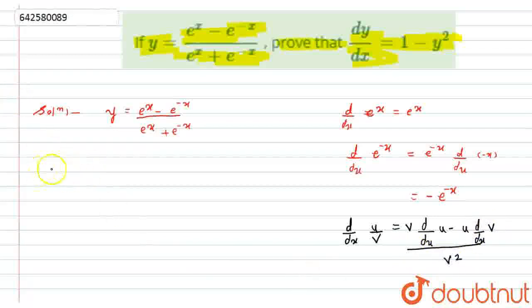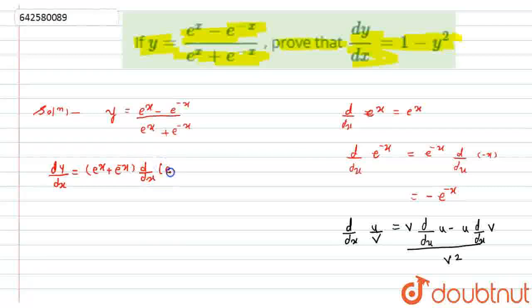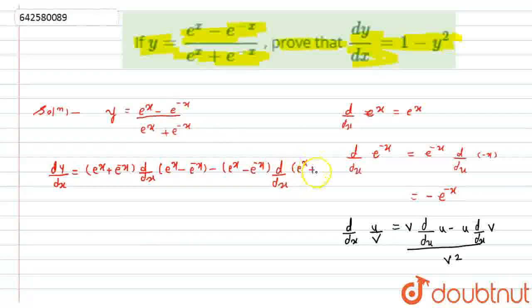So according to this, if I will differentiate y with respect to x, dy by dx will become equal to v — that is (e raised to x plus e raised to minus x) — times d by dx of (e raised to x minus e raised to minus x), minus (e raised to x minus e raised to minus x) times d by dx of (e raised to x plus e raised to minus x).